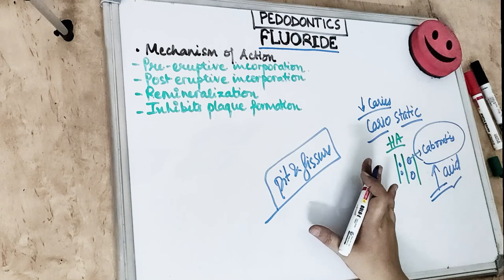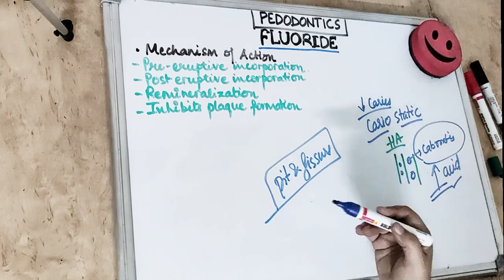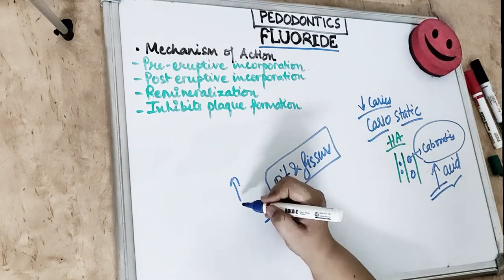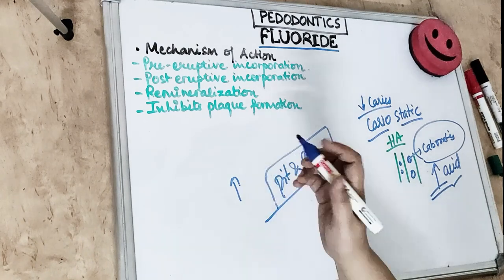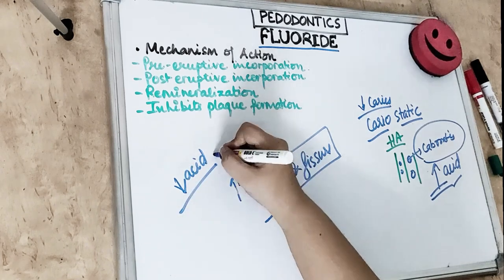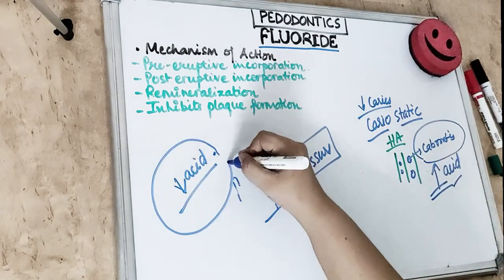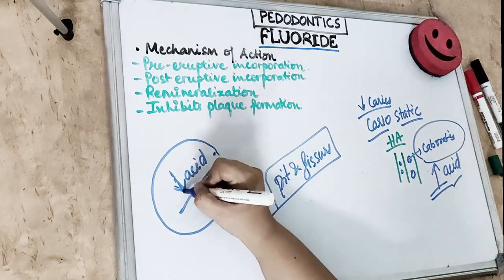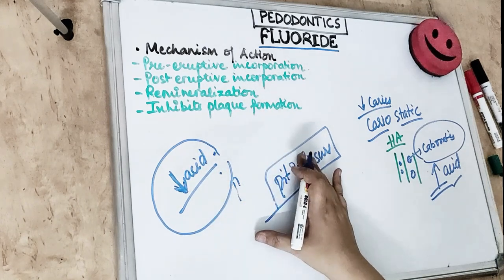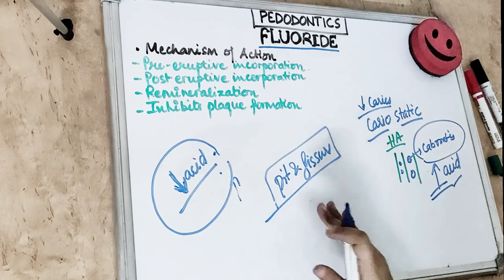Post-eruptive exposure also has significant effects. When fluoride is present in the enamel at the pre-eruptive stage, it increases crystal size, improves crystallinity, and produces decreased acid solubility. The incorporation of fluoride at the pre-eruptive stage actually reduces acid solubility of the enamel. The cusps are also more rounded and the fissure pattern is improved, which diminishes caries.